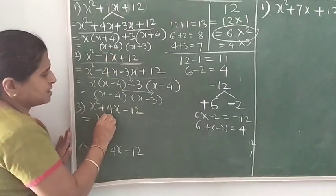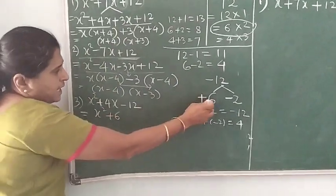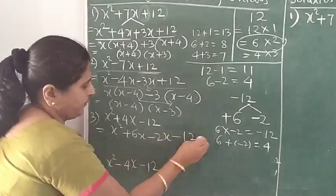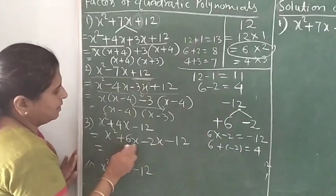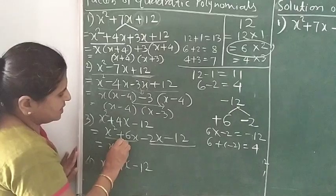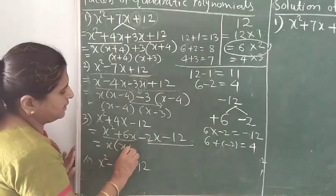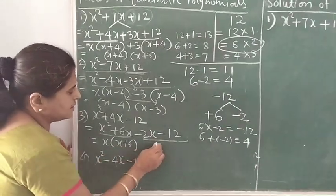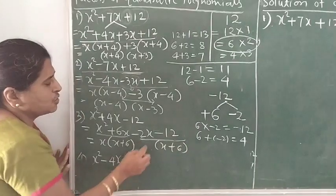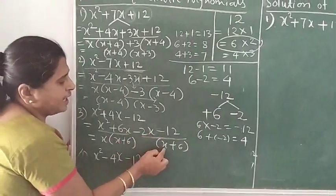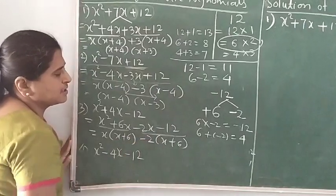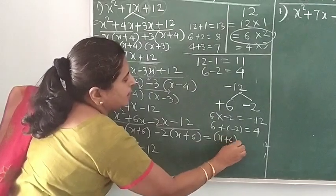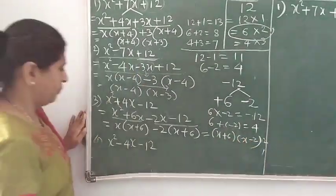We factorize as x² + 6x − 2x − 12. Taking x common from the first two terms gives x(x + 6). Using the same trick, copy the bracket (x + 6), and from the term −2x, taking out x leaves −2. So the factors are (x + 6)(x − 2).